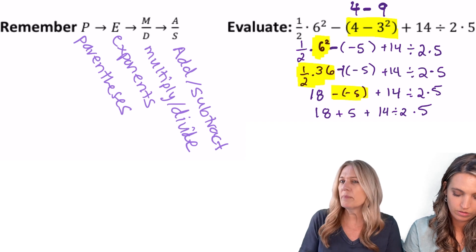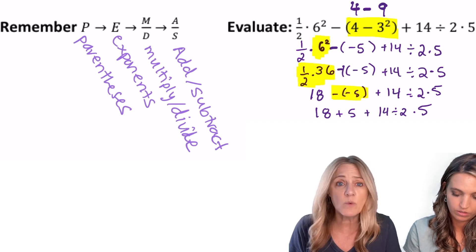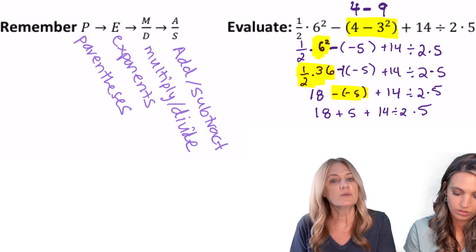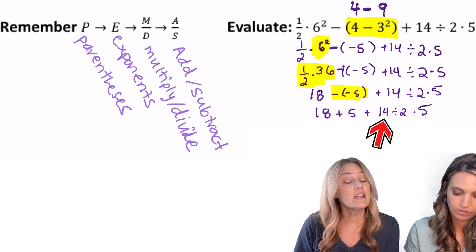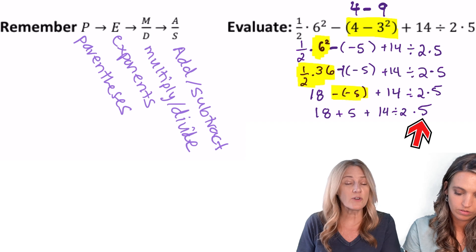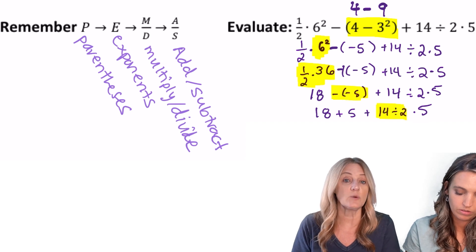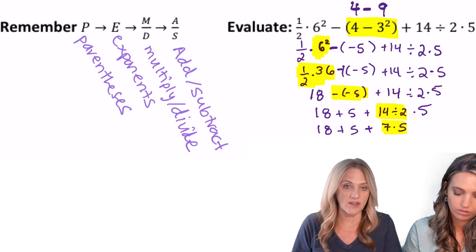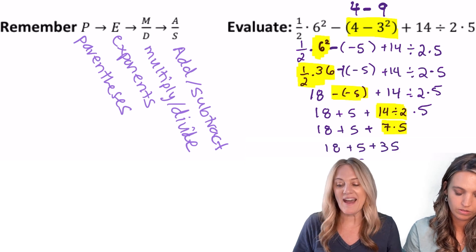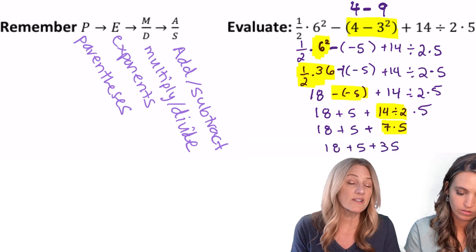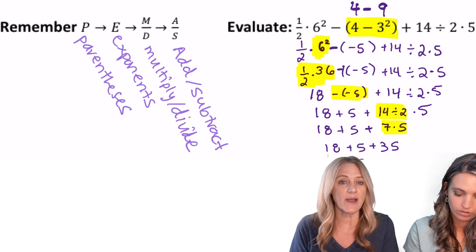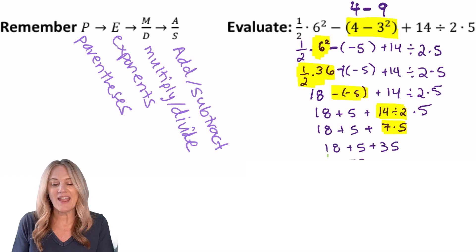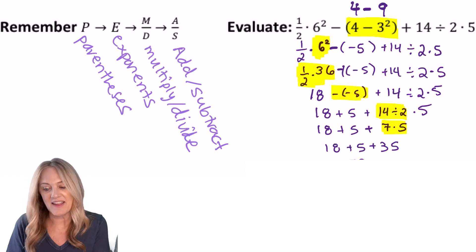Then we have plus 14. Well, I can't work on addition or subtraction yet. 14 divided by 2 times 5, in order left to right. So the first part of that is 14 divided by 2, which is 7, and then 7 times 5, 35. Now let's go back and take care of addition or subtraction in order from left to right. Well, it's all addition this time, so let's just go ahead and add: 18 + 5 + 35 = 58.